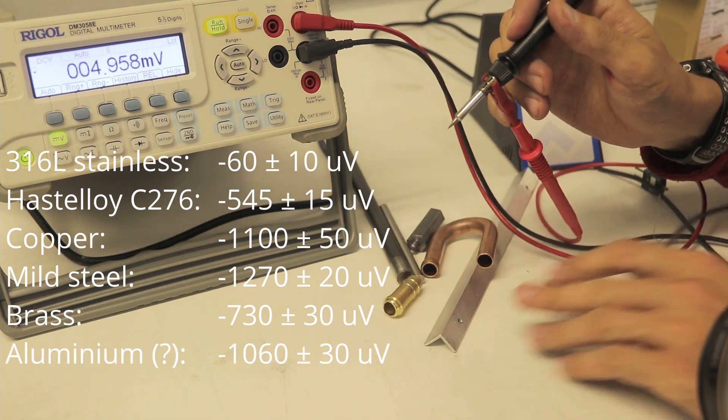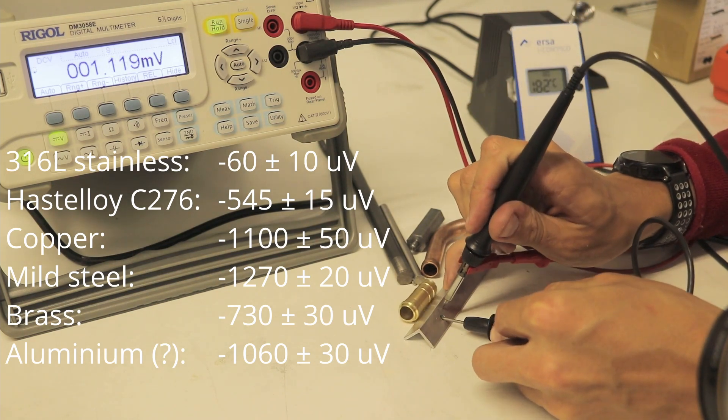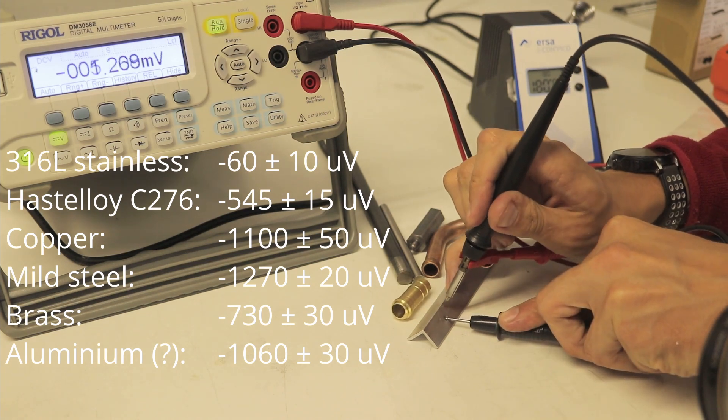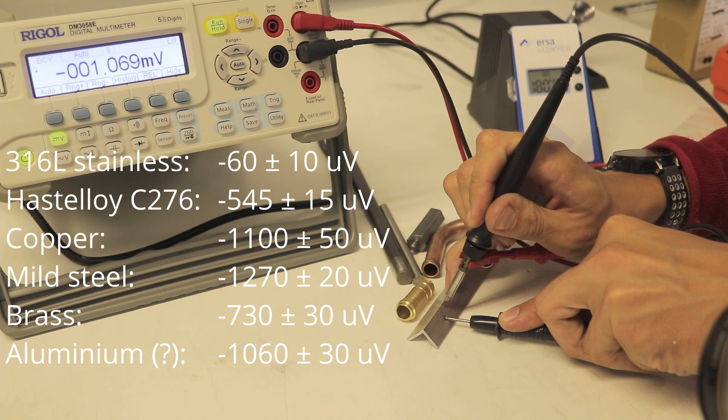Let's look at aluminum. 1061 microvolts.